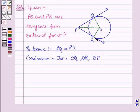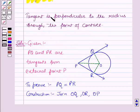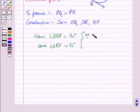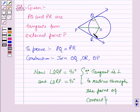Now we have joined OR, OQ and OP. Angle OQP is equal to 90 degrees and angle ORP is equal to 90 degrees. This is by using the key idea that the tangent is perpendicular to the radius through the point of contact. So these angles are of 90 degrees.